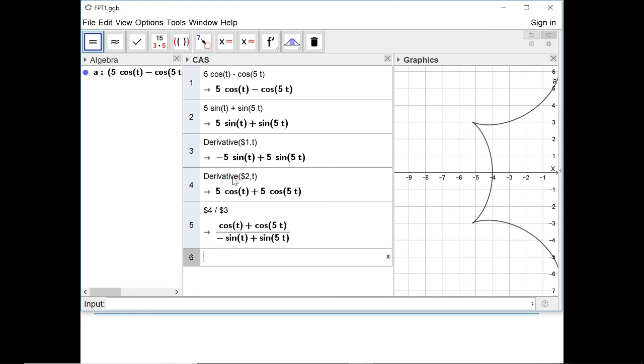Now you have to be careful here. It's very easy to actually do dx/dy instead of dy/dx by dividing these in the wrong order. So just keep check of which way around you're dividing things and make sure that you get it right. Okay, let's have a look at how we'll write this up in our solution.